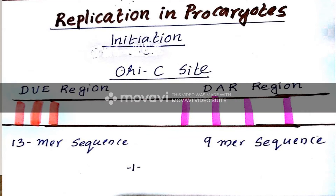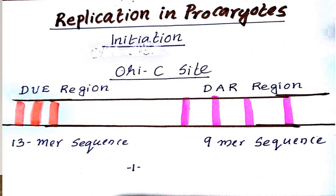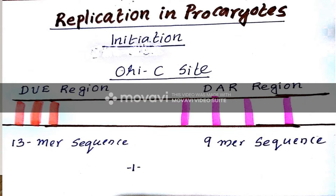The 13-mer sequences are specifically called the DUE region and the 9-mer sequences are specifically called the DAR region. DUE stands for DNA Unwinding Elements, and DAR means the DNA Assembling Region.